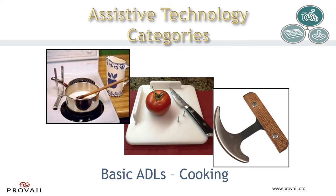Here are some aids for cooking. On the left is a support to hold the pan handle in place while stirring. The middle image shows an adapted cutting board with some vertical guides to help keep the food in place, as well as some pin-type holders to manage the food so you can cut it with just one hand. The item on the right is called a rocker knife — it also assists to cut food more effectively with one hand.